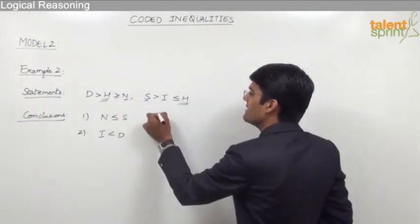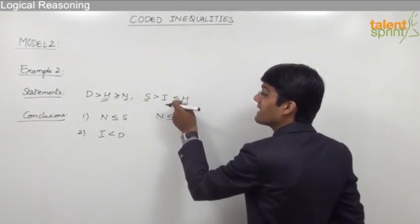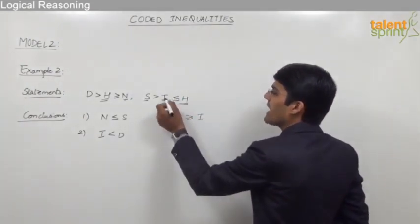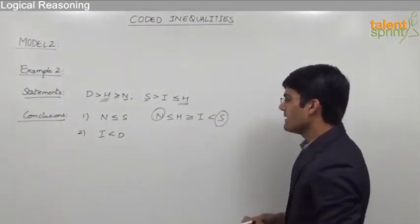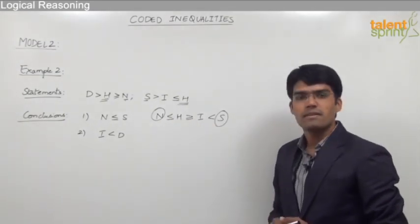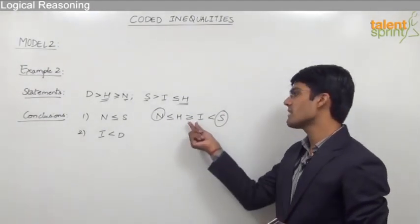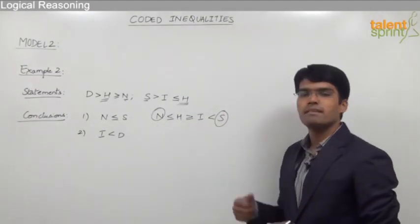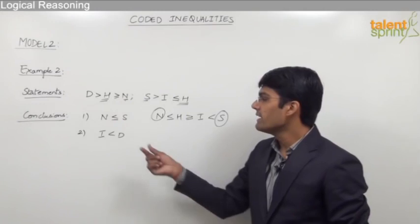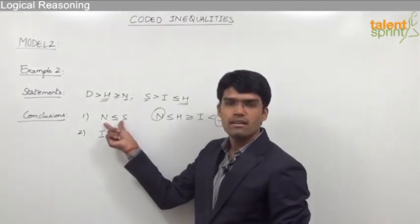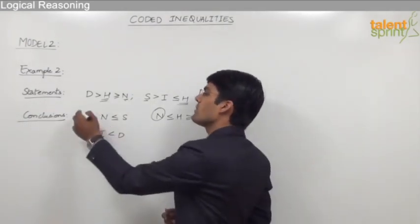Combining the statements via h: n ≤ h, h ≥ i, and i < s. When we try to compare n and s, we find dissimilar inequalities in between. From rule number 3, whenever we have dissimilar inequalities, the variables cannot be compared. So the conclusion n ≤ s is false — because n could also be greater than s.